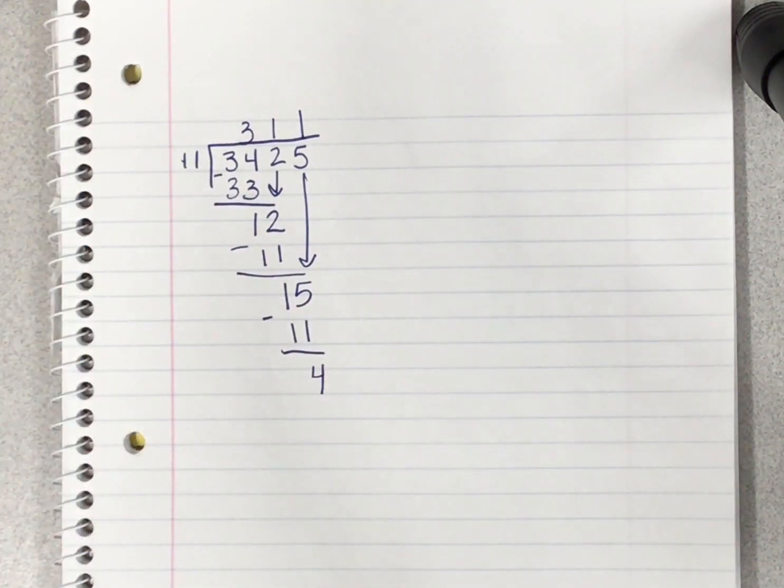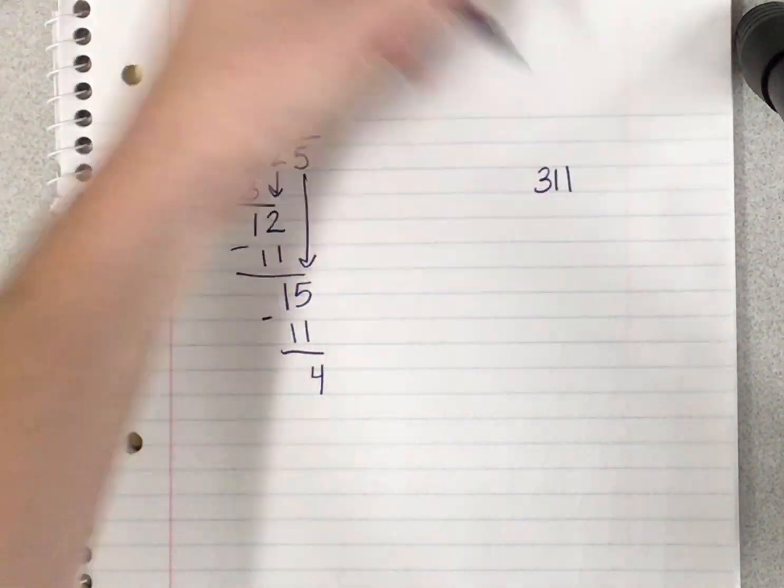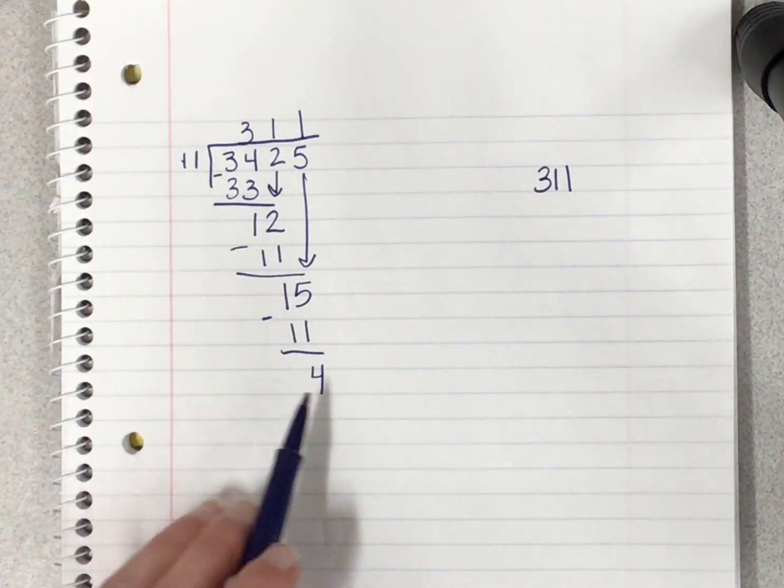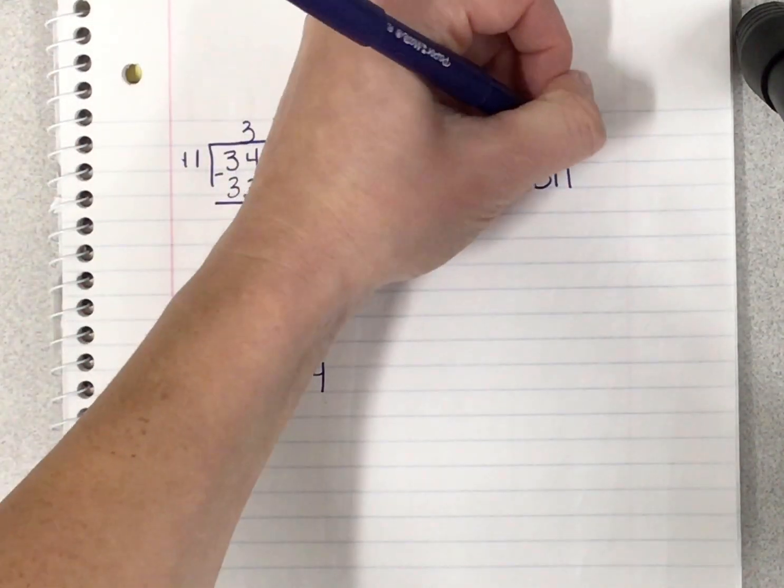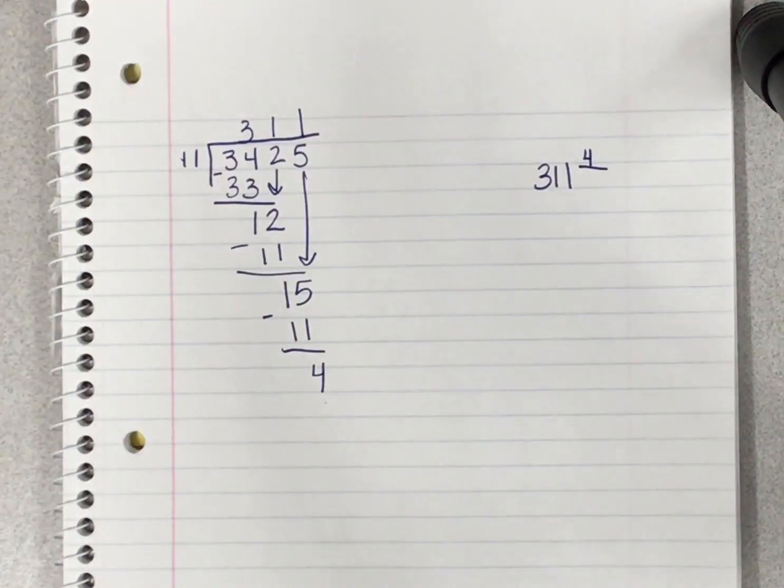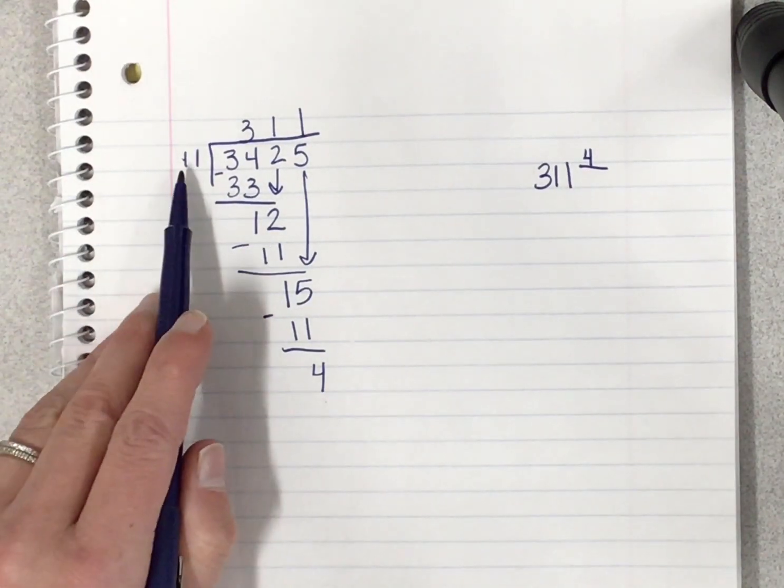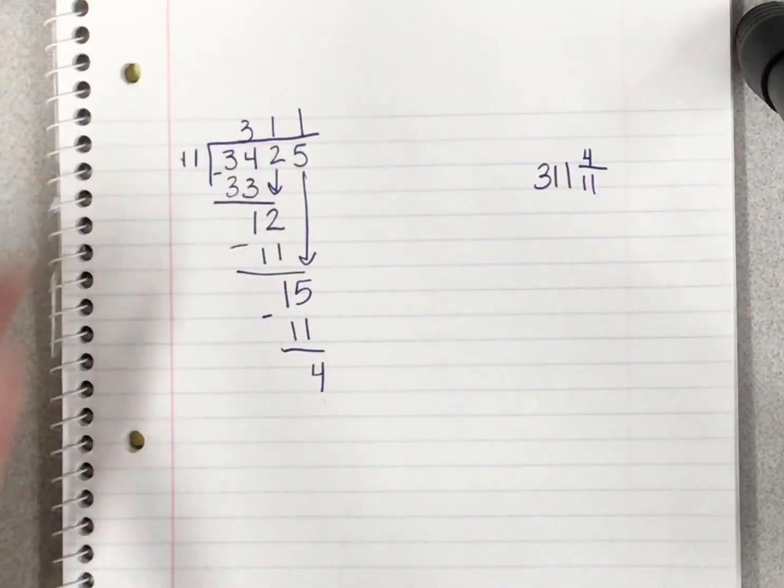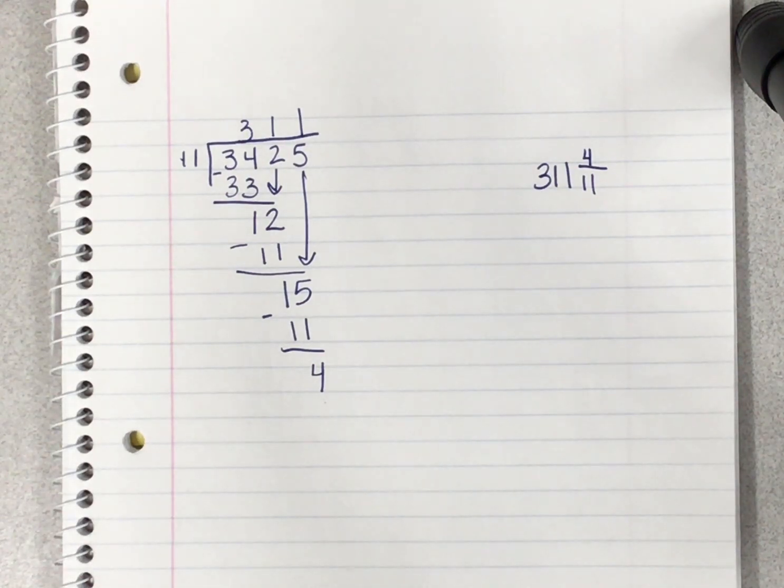I have two options. I can stop here and write my remainder as a fraction. Off to the side, I'm going to write 311. 4 was my remainder—that is the numerator or the top number in my fraction. 11 was my divisor—that is my denominator in my fraction. 311 and 4 elevenths. That's one possible way to write a remainder.